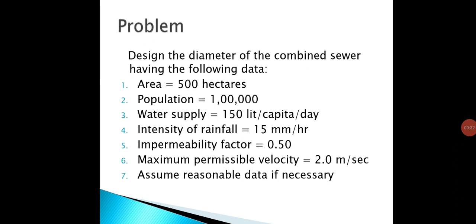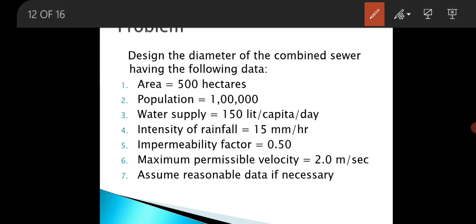The question is: design the diameter of the combined sewer having the following data. Area is given as 500 hectare, population is 1 lakh, and water supply is 150 litre per capita per day.